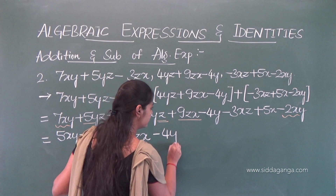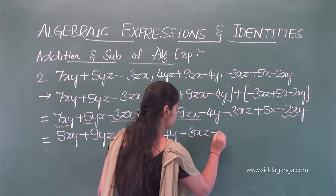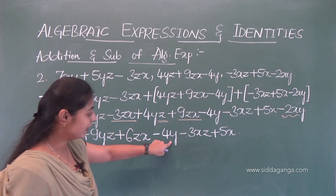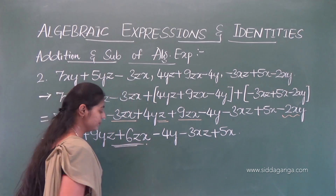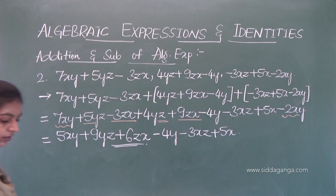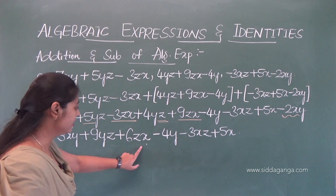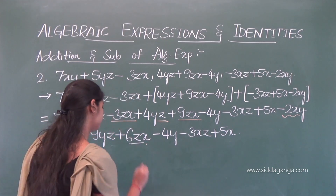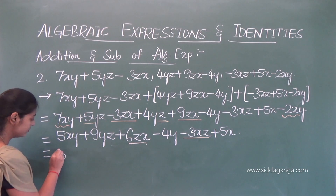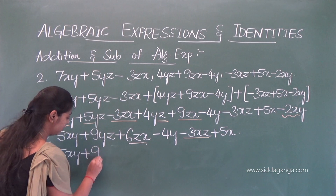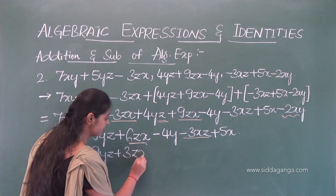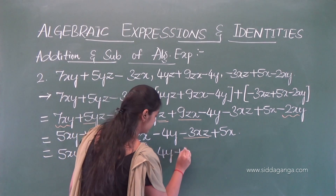So we write the unlike terms as they are: minus 4y, minus xz, plus 5x. Note that zx and xz are the same like terms. So combining 6zx and minus 3xz gives 3zx. The final answer is 5xy plus 9yz plus 3zx minus 4y plus 5x.